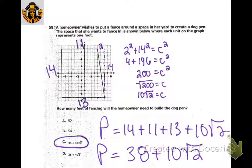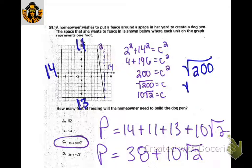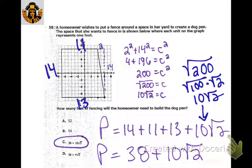We're looking for perimeter to put a fence around this — so just count. This is 14 units, this straight edge is 11, that one is 13. For the diagonal, create a little right triangle: 2 units one way, 14 down. The Pythagorean theorem gives √200. Simplify: √200 = √100 × √2 = 10√2. Adding the other three sides gives 38, so the total perimeter is 38 plus 10√2.